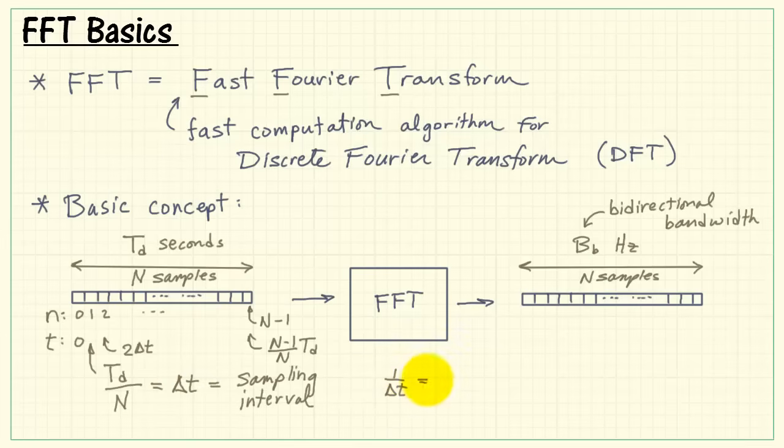The reciprocal of delta t is n divided by the total time for the time waveform, t sub d. This is our sampling frequency, samples per second. We'll write that as f sub s for sampling frequency, and it has units of hertz, or you could call it samples per second.